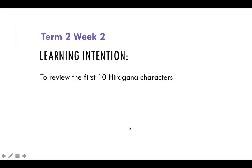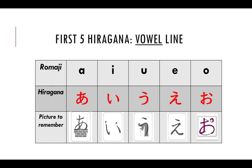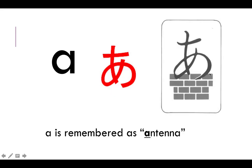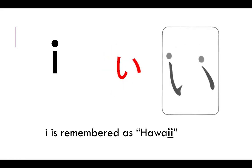Let's look at the Term 2 Week 2 learning intention. We're going to review the first ten hiragana characters. We know the first five hiragana are based on the vowels, pronounced: a, i, u, e, o. As you can see from each slide, there is a phrase that will help you remember the sound or the action of each hiragana character.